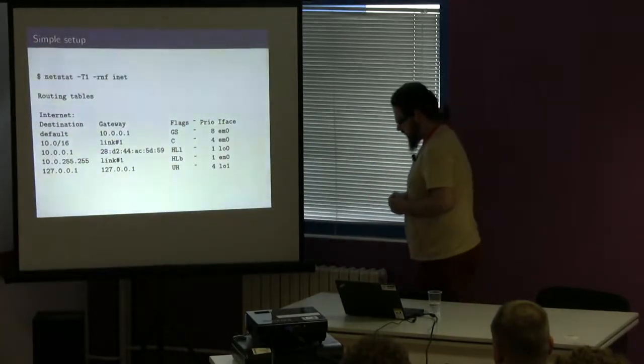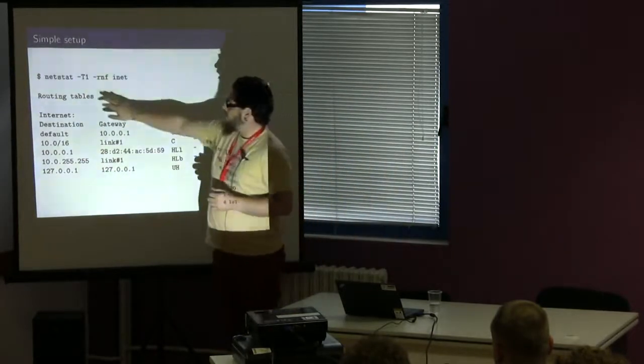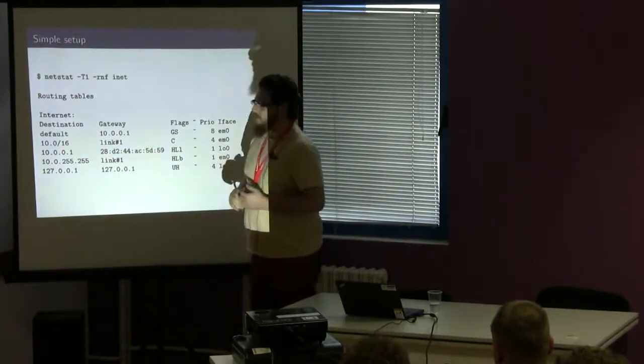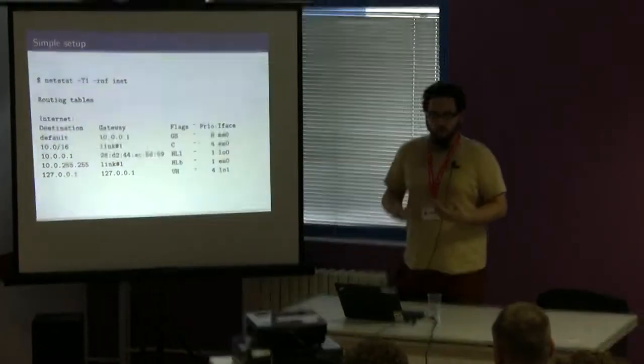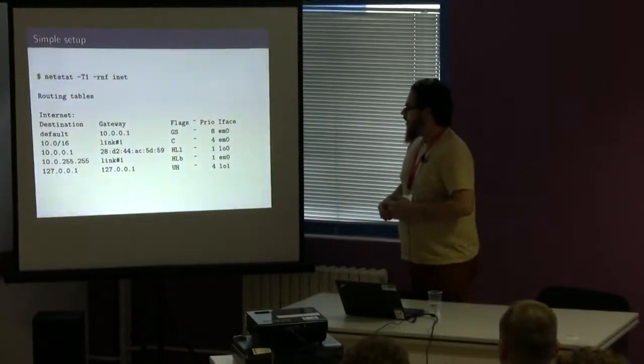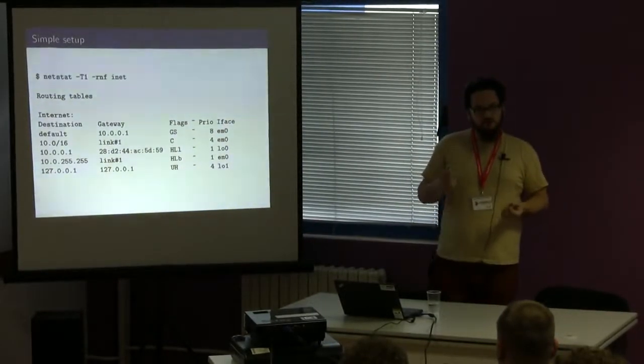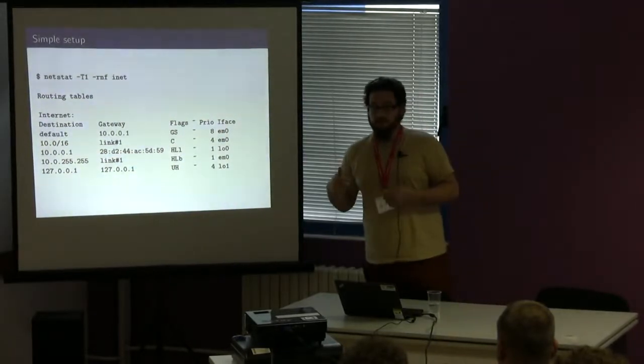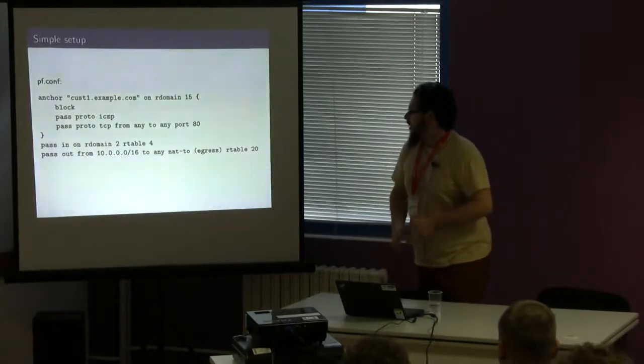This is a slightly cleaned up example of what it looks like. You see here routing domain one has been changed. The rest of it is normal. In netstat, to take a look at your routing table, you add the dash T1 option. That will show you the routing table only for that specific routing domain. As I mentioned earlier, if you run just regular netstat, it'll show you for the default routing domain, also known as routing domain zero.